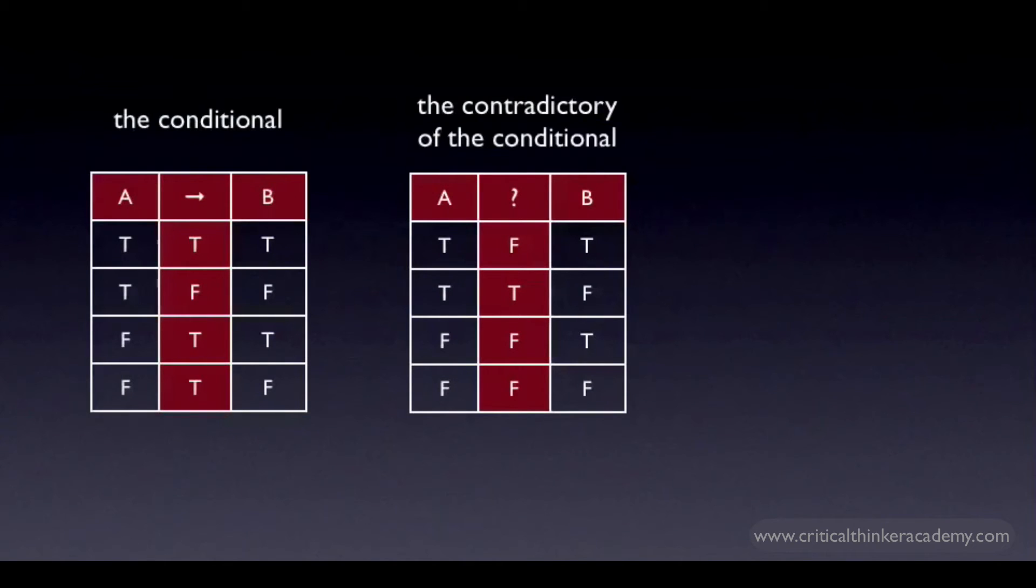The contradictory of the conditional is, by definition, a claim that is true whenever the conditional is false and vice versa. So the middle column has the opposite truth value of the conditional for the same values of A and B. This, we know, must be the truth table for the contradictory of the conditional. The question is, what operations on A and B will yield this truth table? That's the question represented by the question mark in between A and B.